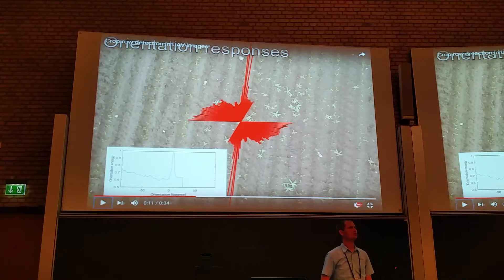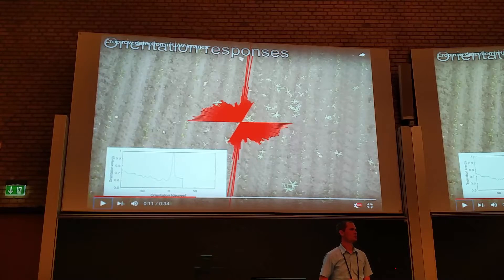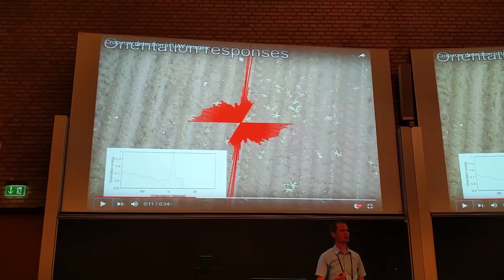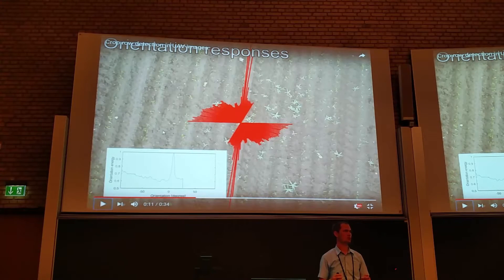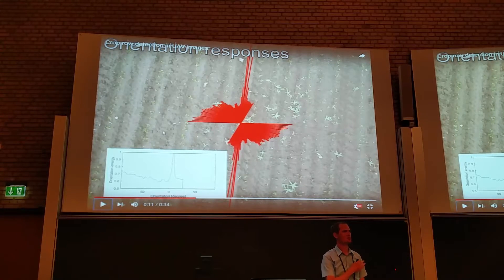Regarding the excess green threshold, I have chosen a value of zero or a very low value close to zero. The excess green is calculated as a few times the green channel minus the red or the blue channel. Its neutral value would be zero; if it is green it would be positive, and if it is red or blue it would be negative. So I threshold at a value close to zero.